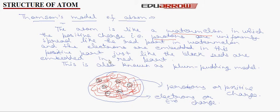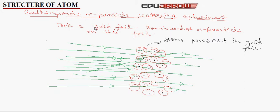Now let us discuss Rutherford's alpha particle scattering experiment. Rutherford, to verify Thomson's model, proceeded with an experiment famously called alpha particle scattering experiment. He took a gold foil and bombarded alpha particles on this foil and noted the observations.